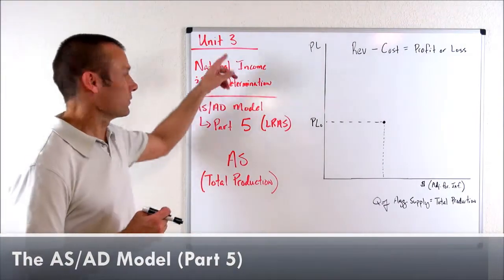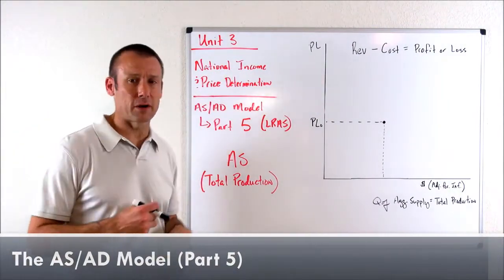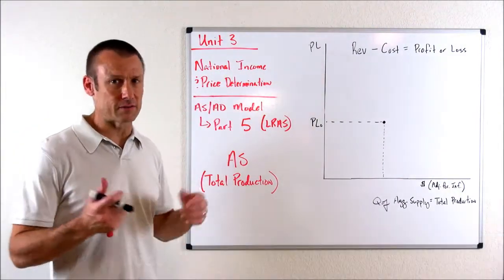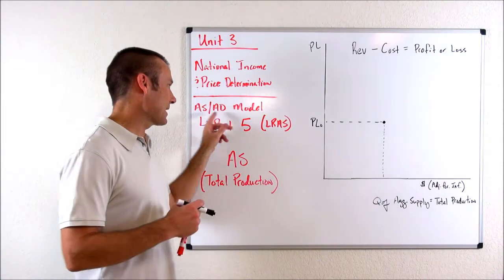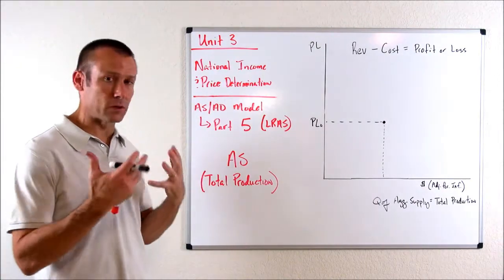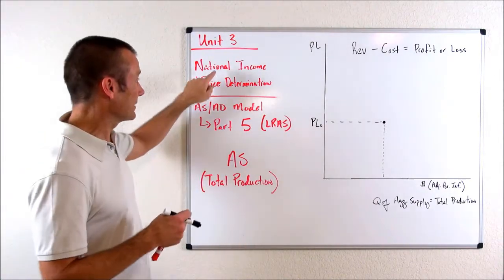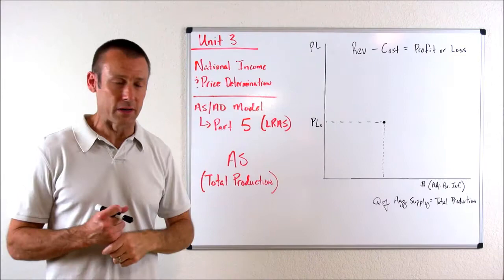Hey, everybody. Welcome back. We're on Unit Three, National Income and Price Determination. That's the title of the unit. We're focused on the AS/AD model — the model we're going to use to focus in on national income and price determination.